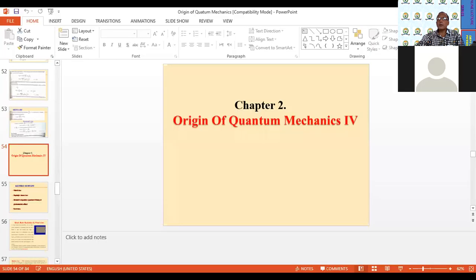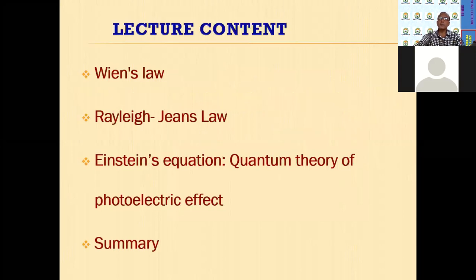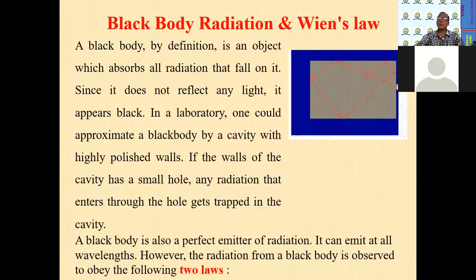Here we will see a few more articles on the origin of quantum mechanics. Let me share the screen first and then we will go for today's lecture. So far we have completed three different sections of the origin of quantum mechanics. Today we are going to consider a few more articles. I will try to cover Wien's Law, Rayleigh-Jeans Law, and Einstein's equation — that is the quantum theory of the photoelectric effect. At the end, I will conclude with a summary of today's lecture.